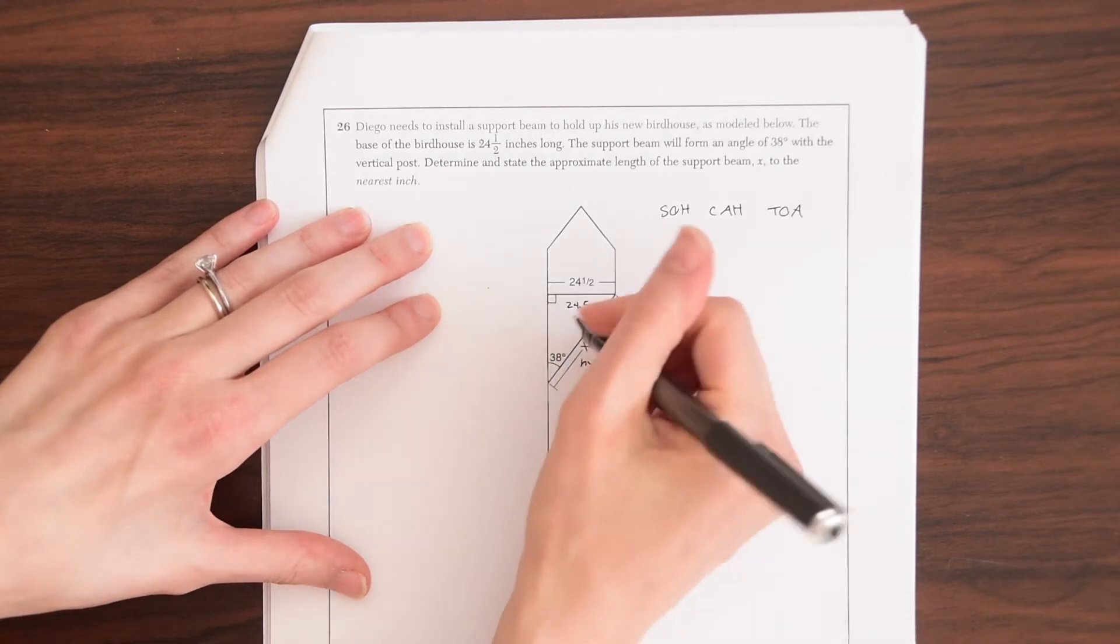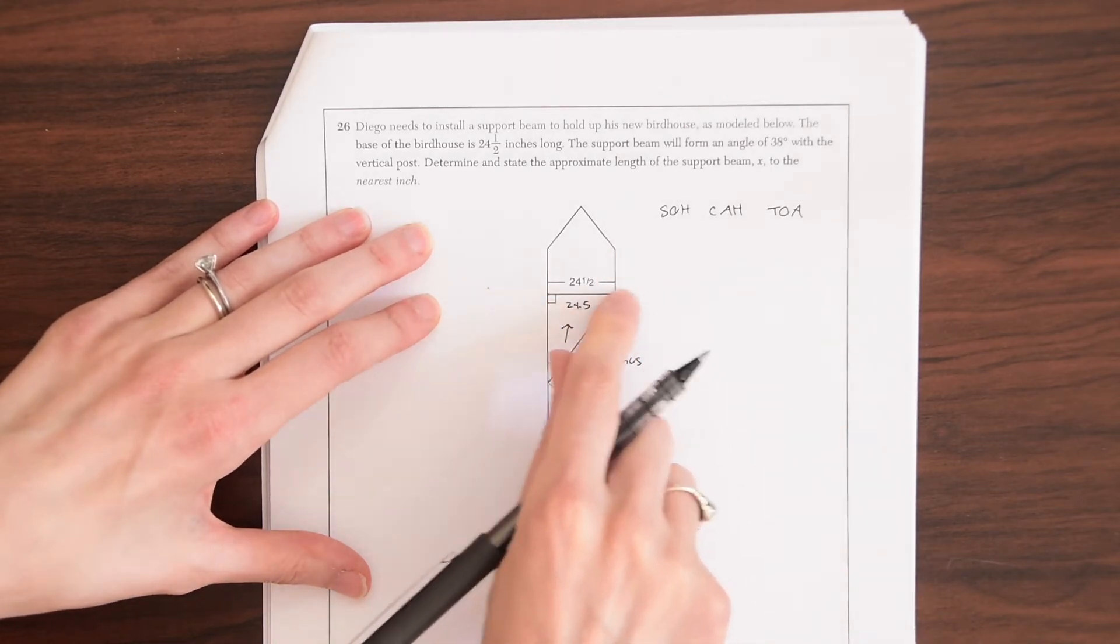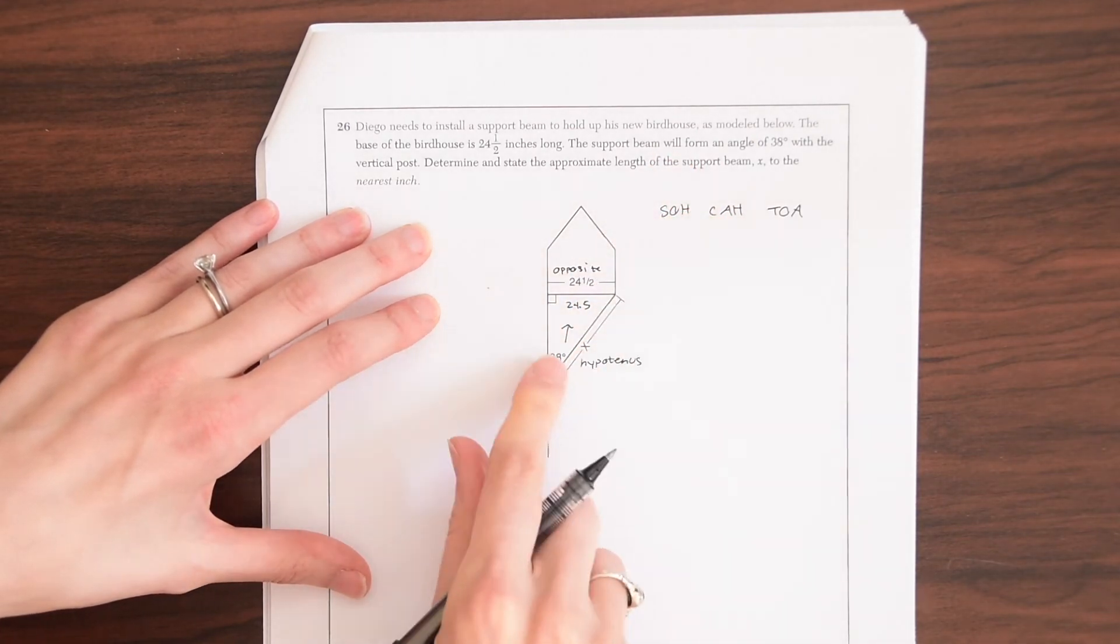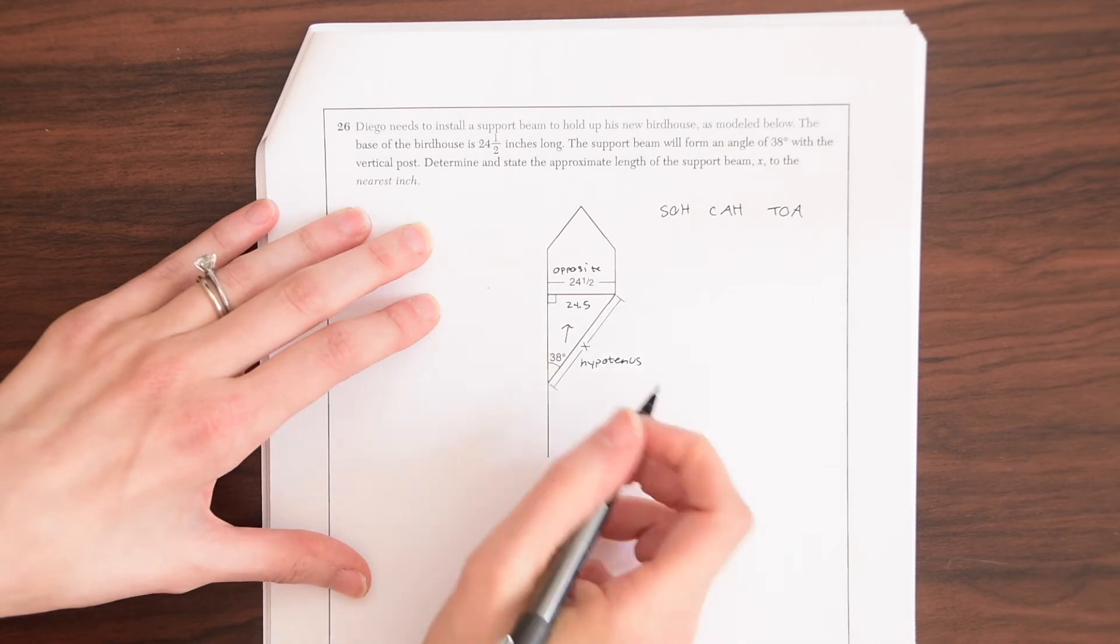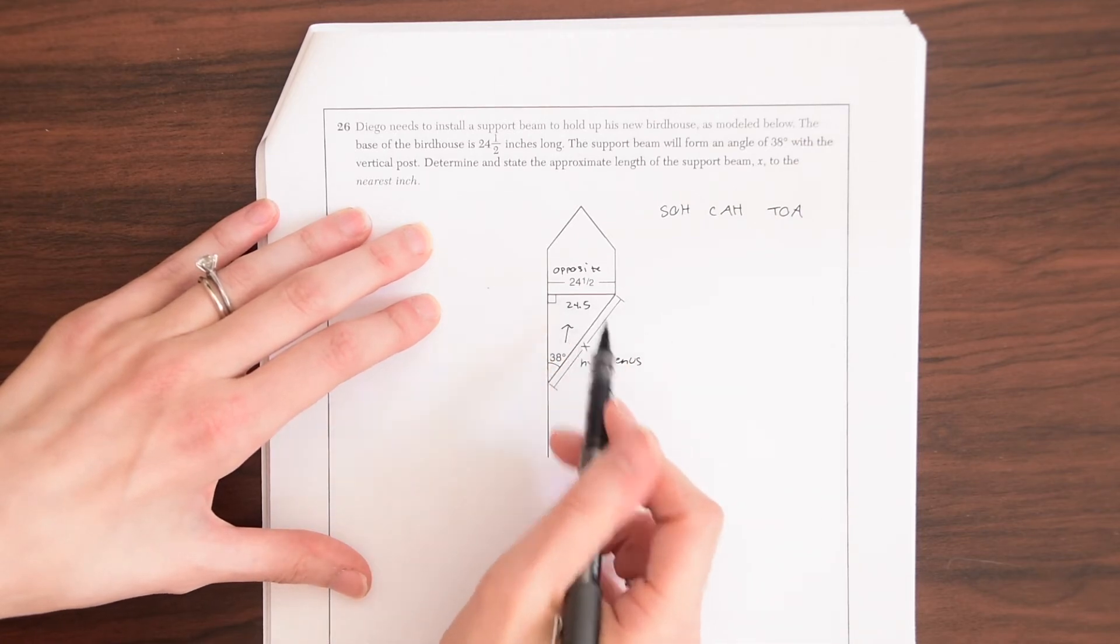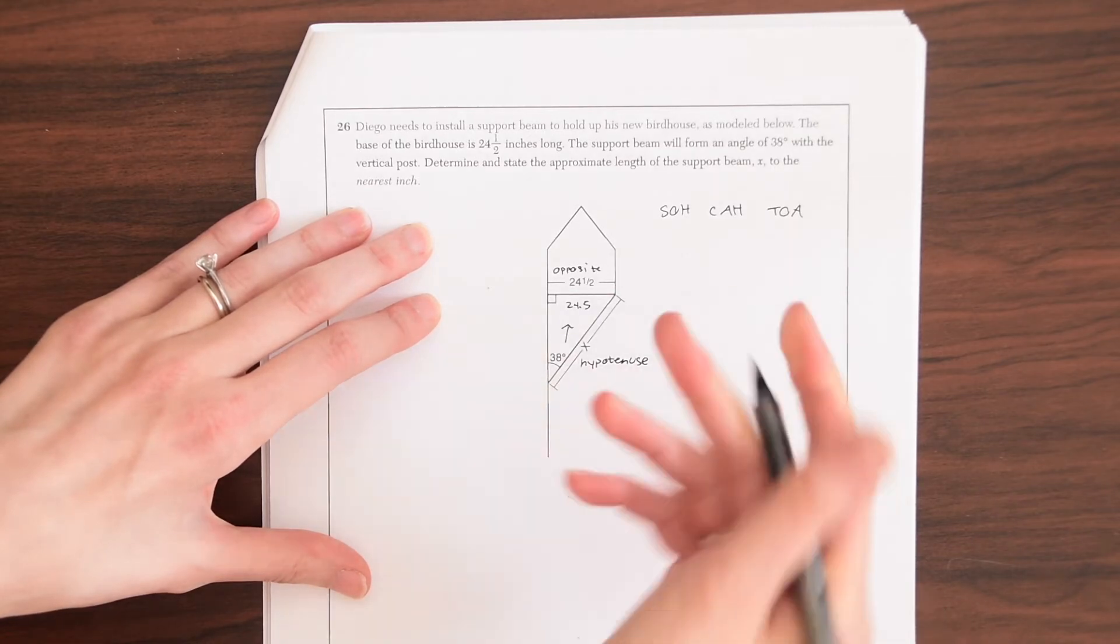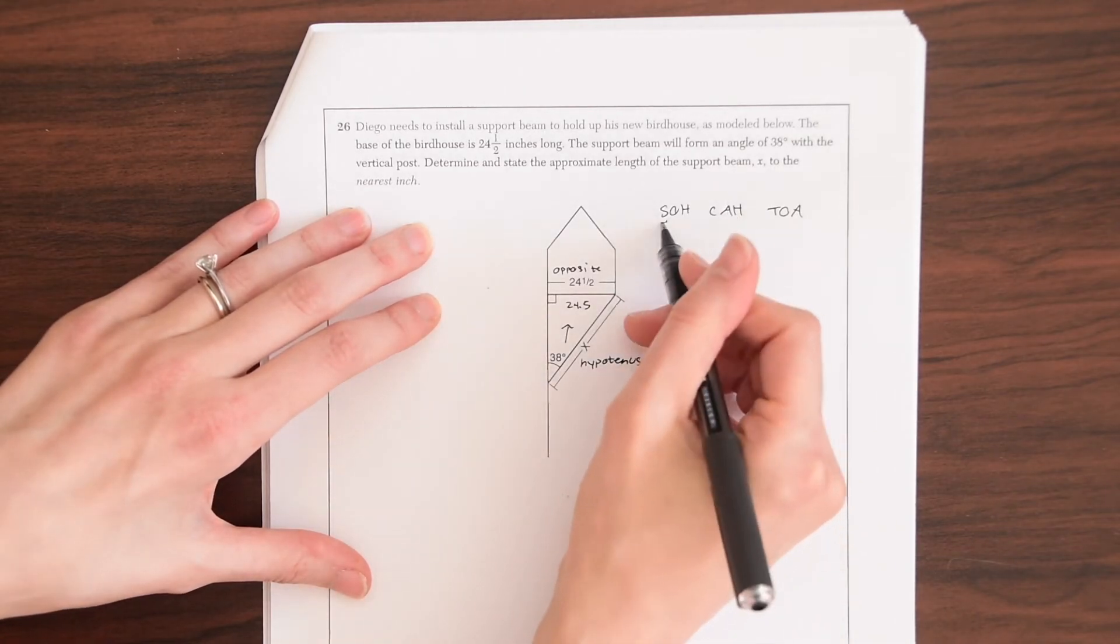And then this value that we're given here is the opposite because it is opposite to this angle, right? So if we have the opposite and we want the value of the hypotenuse, we're going to be dealing with sine, right?